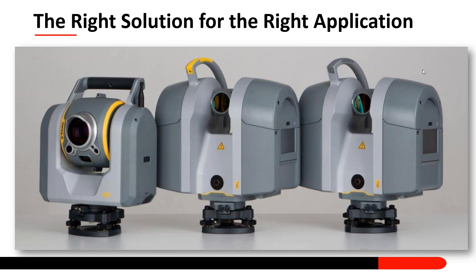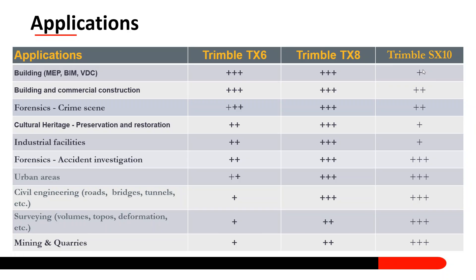Here is just a Trimble scanning platform. On the left you have the Trimble SX-10, in the middle the TX-6, and on the far right the TX-8. The Trimble SX-10 is a hybrid — it's a robotic total station with scanning capabilities, while the TX-6 and TX-8 are both traditional terrestrial laser scanners.